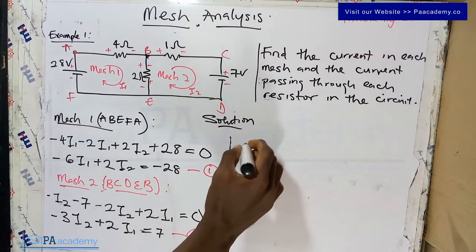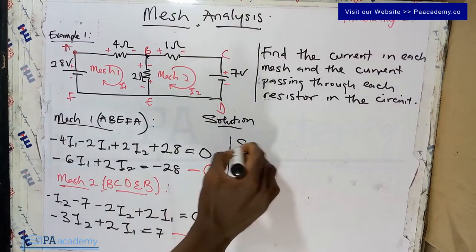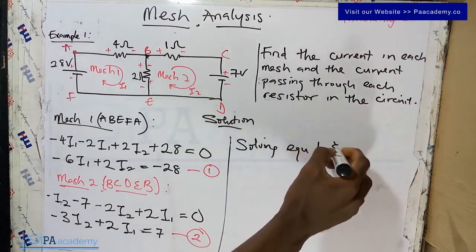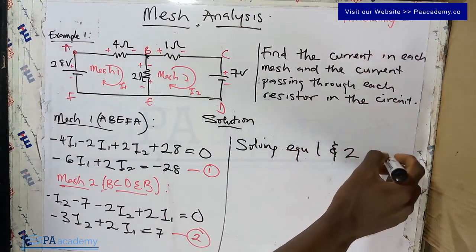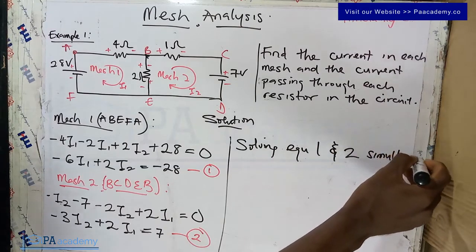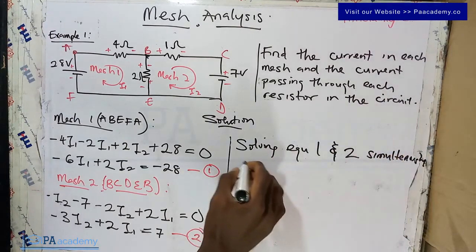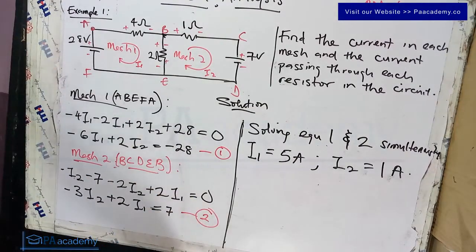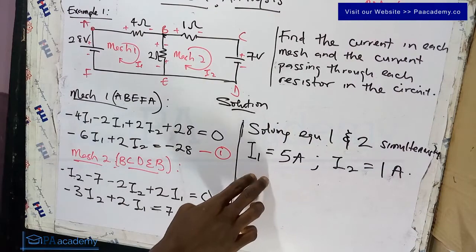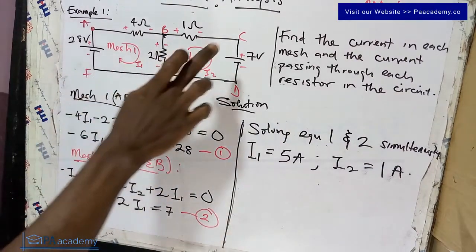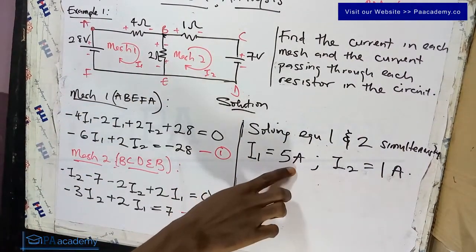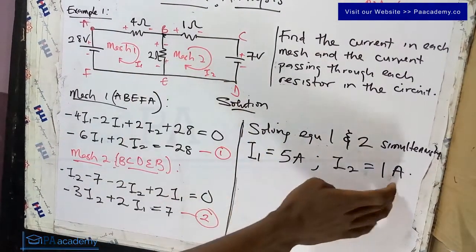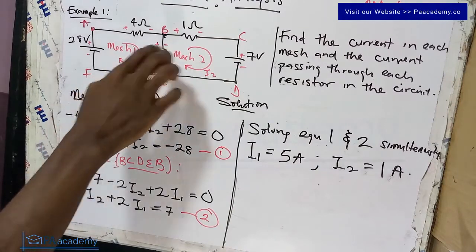Now we solve Equation 1 and Equation 2 simultaneously. Solving them gives us I1 = 5 amperes and I2 = 1 ampere. So the current flowing through mesh one is 5 amperes and the current flowing through mesh two is 1 ampere.